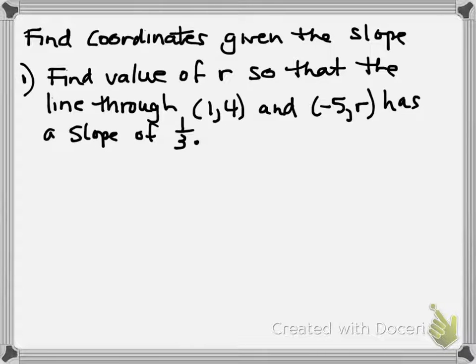So we're going to find coordinates given the slope. The directions say: Find the value of r, that's a variable, so that the line through points (1,4) and (-5,r) has a slope of 1/3.